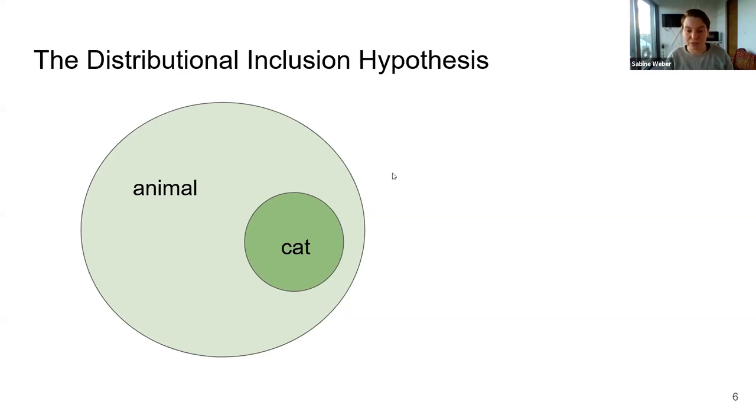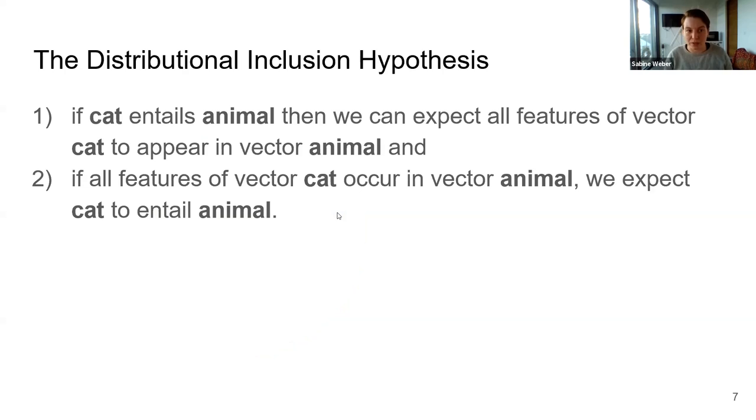If we want to represent animal and cat as vectors in a multi-dimensional space, we can create vectors by specifying the features of the vectors as their contexts. Working with this vector, Geffet and Dagan come up with two hypotheses. One, if cat entails animal, then we can expect all features of the vector that represents cat to appear in vector animal. And vice versa, if all features of the vector cat occur in the vector animal, we can expect for cat to entail animal.